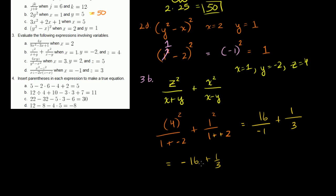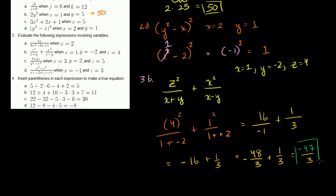To add these as fractions, we need a common denominator. Negative 16 is the same as negative 48 over 3. So negative 48 over 3 plus 1 third — with common denominator 3 — gives negative 48 plus 1 equals negative 47. So the answer is negative 47 over 3.